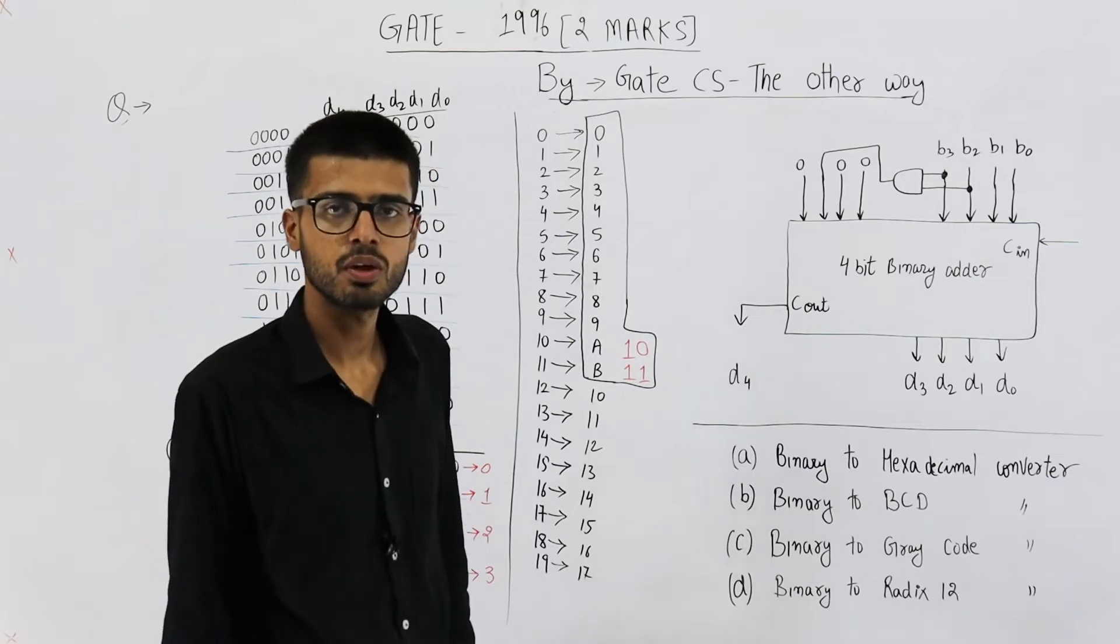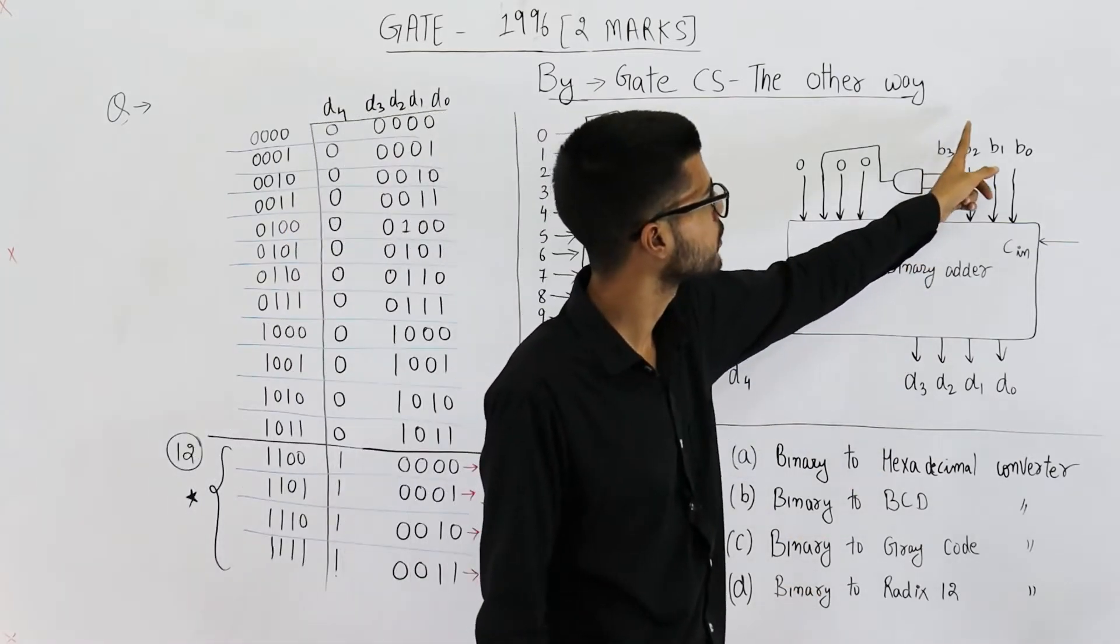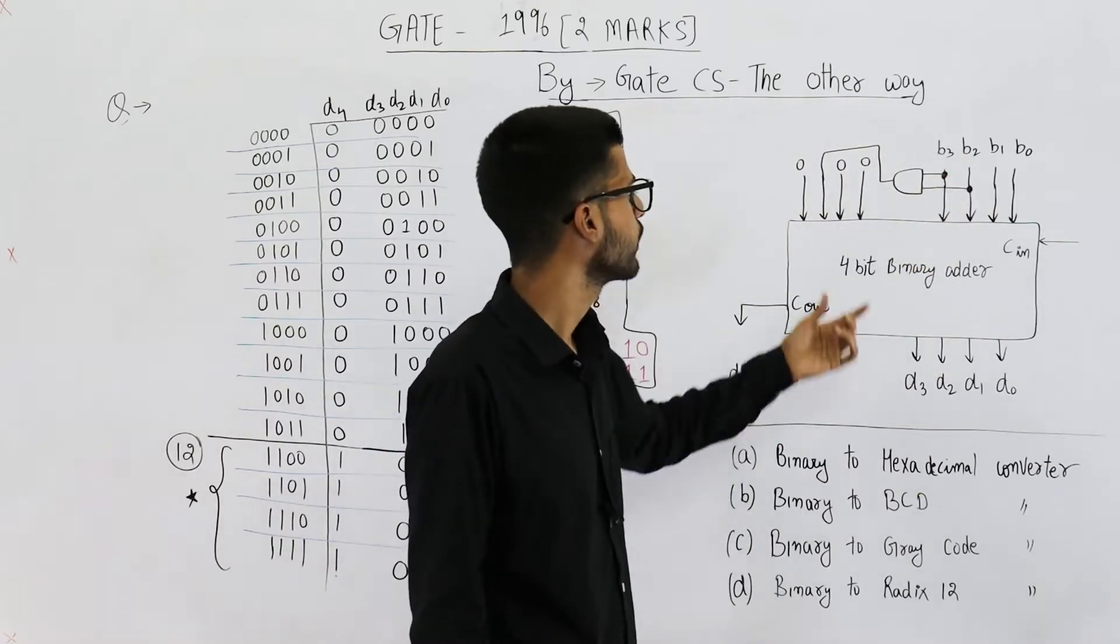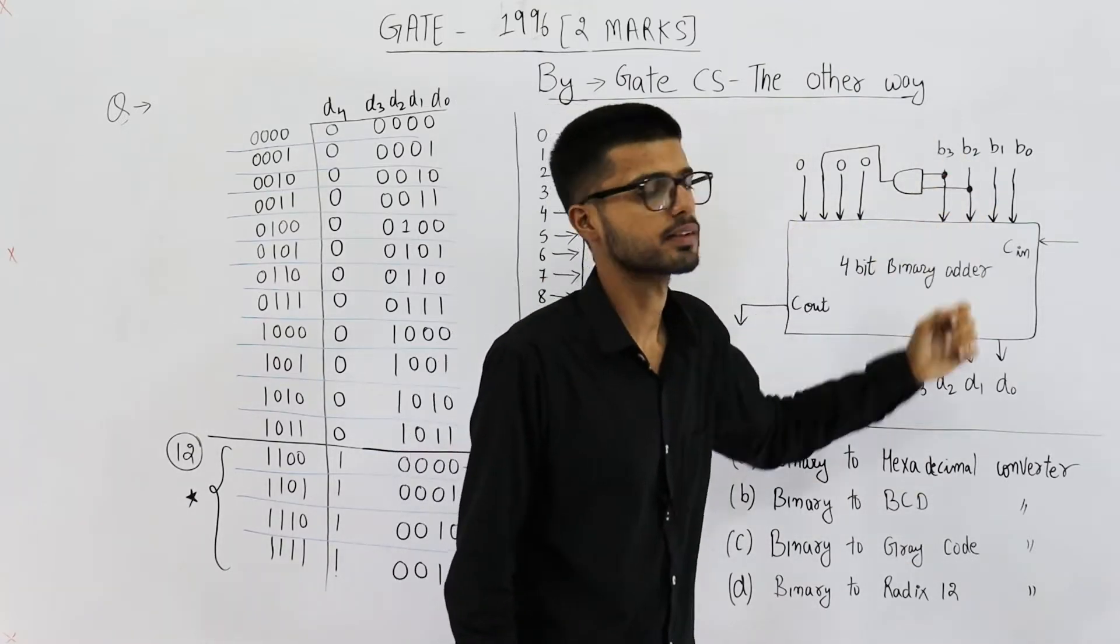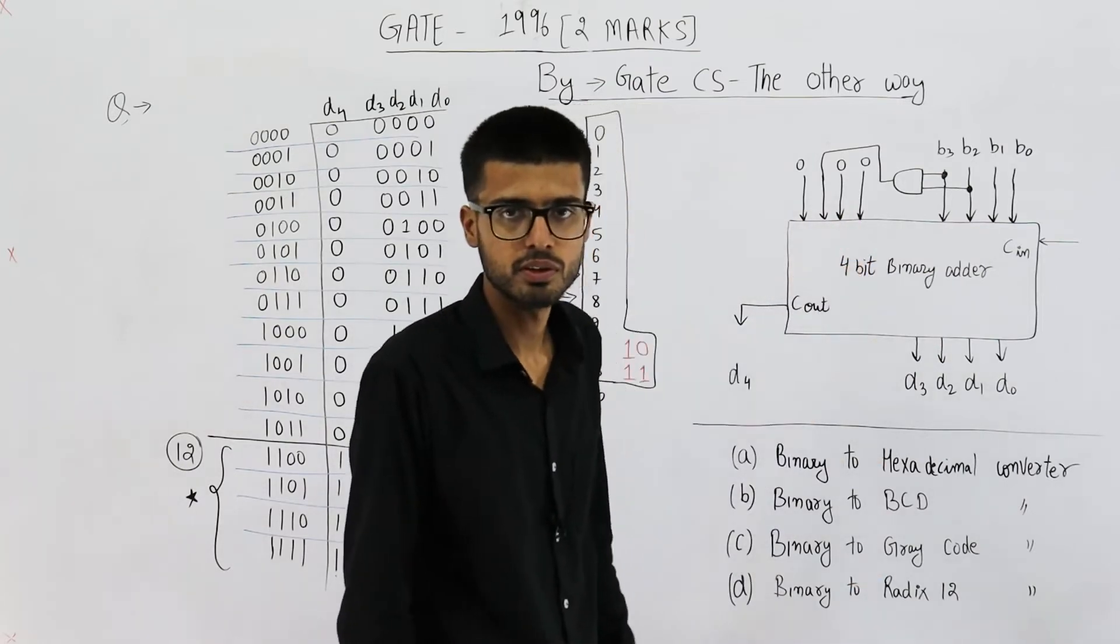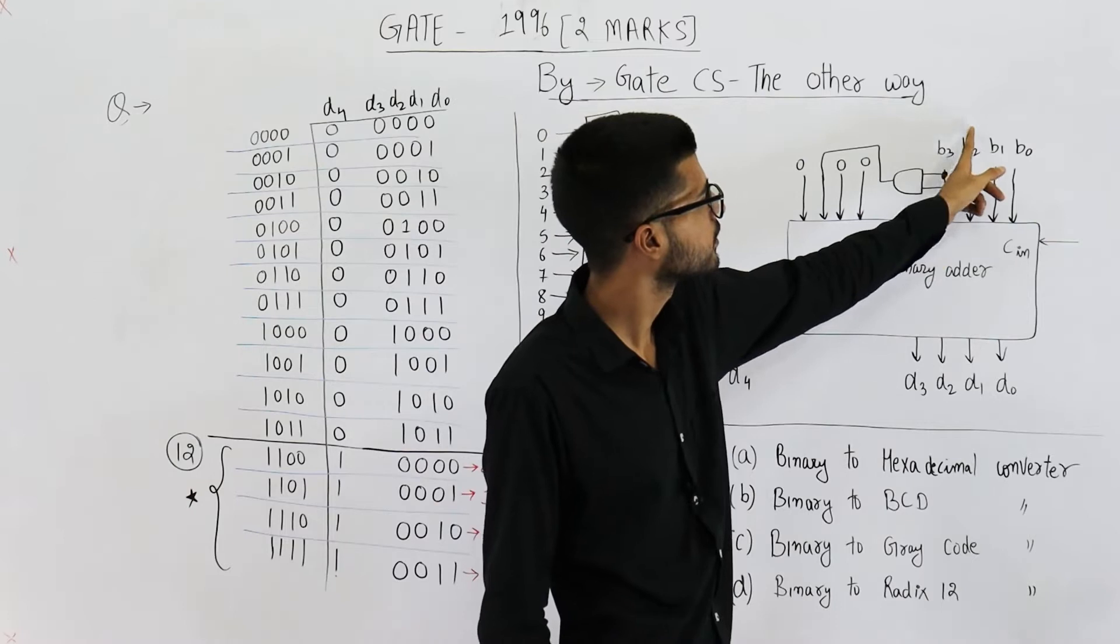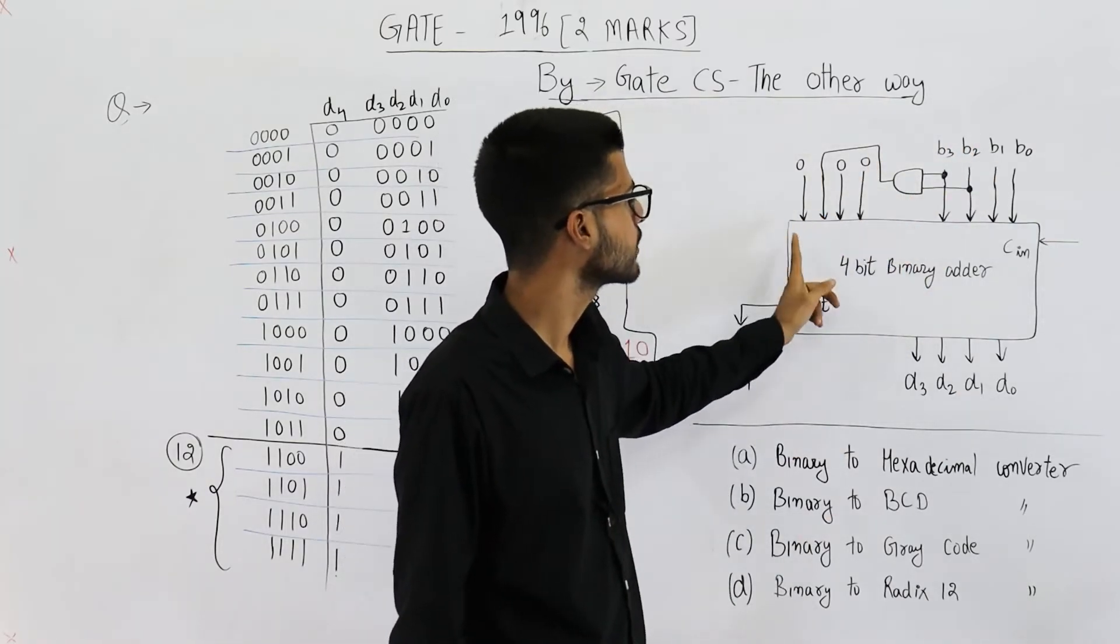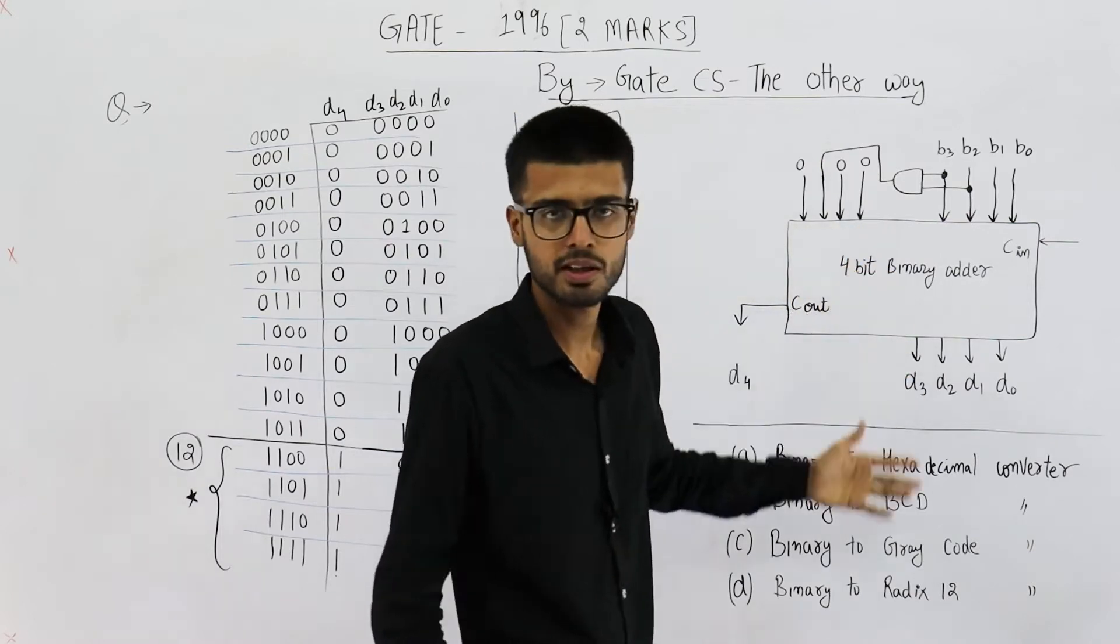First thing that you can notice is, when both of these inputs are 1-1, when B3 and B2 is 1-1, we are adding 4 to this input. See, 0100 will be 4. If both of these or any one of these is 0, this AND gate will output 0. In that case, we are adding 0000. That means 0.